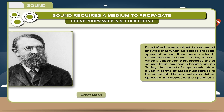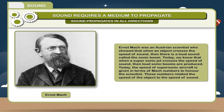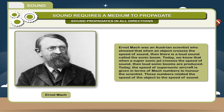Scientist Ernst Mach was an Austrian scientist who showed that when an object crosses the speed of sound, there is a loud sound called the sonic boom. Today, we know that when a supersonic jet crosses the speed of sound, loud sonic booms are produced. The speed of supersonic aircraft is given in terms of Mach numbers to honor the scientist. These numbers relate the speed of the object to the speed of sound.